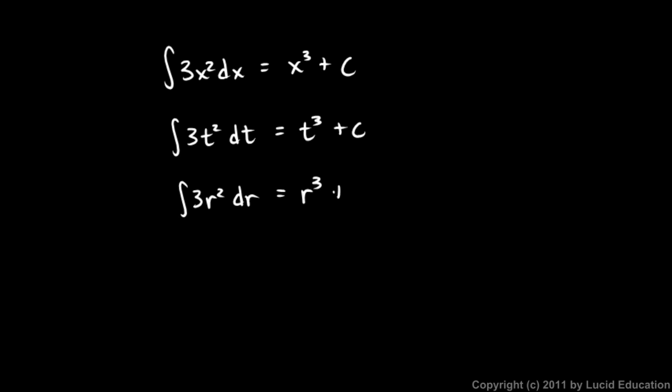Or you might have the integral of 3r squared dr, and that would be r cubed plus c. The important thing is that the variables match. If this is an x squared, a function of x right here, we need a dx. If this is a function of t, we need a dt. And if it's a function of r, we need a dr, or any other variable. But those need to match. The variable in our function needs to match the differential.